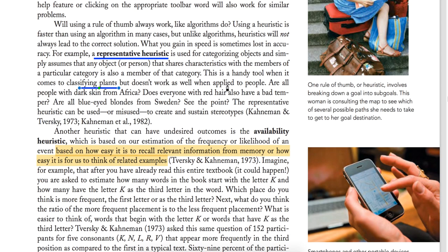But we can't always apply this to people. This is a representative heuristic — we categorize new things into existing categories based on similarity.